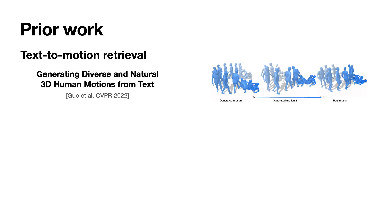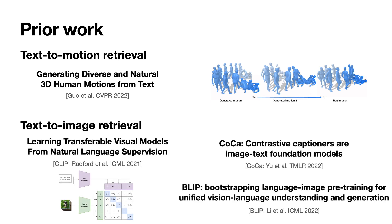We substantially improve the performance by incorporating a joint synthesis and retrieval framework, as well as more powerful contrastive training. Our work also relates to image retrieval methods such as CLIP, which employs a dual encoder to embed image and text into a common space. We also take inspiration from BLIP and CoCa, which add a synthesis branch to the standard retrieval framework.